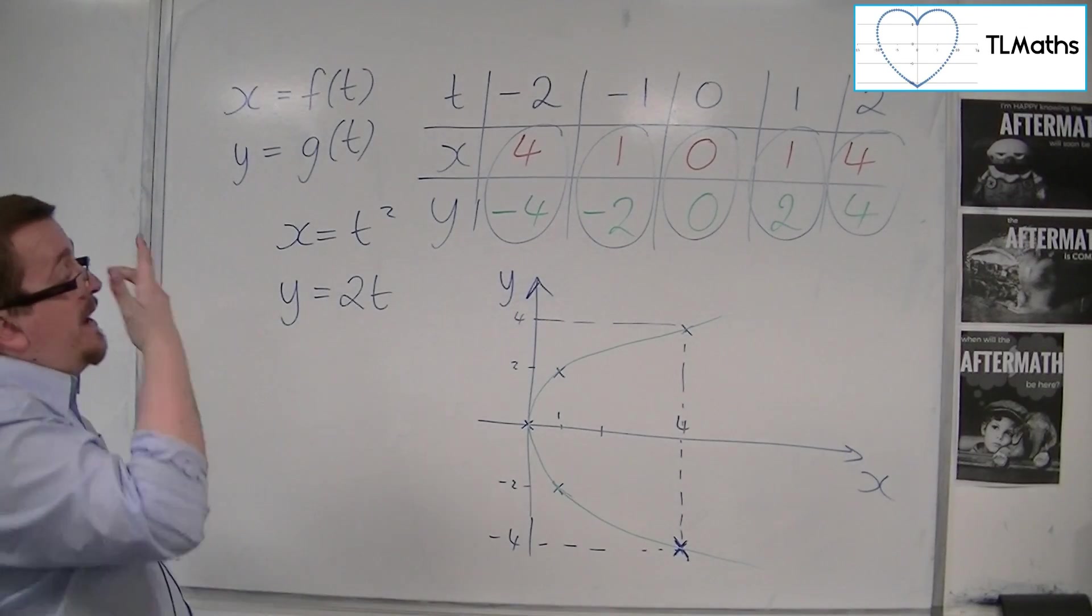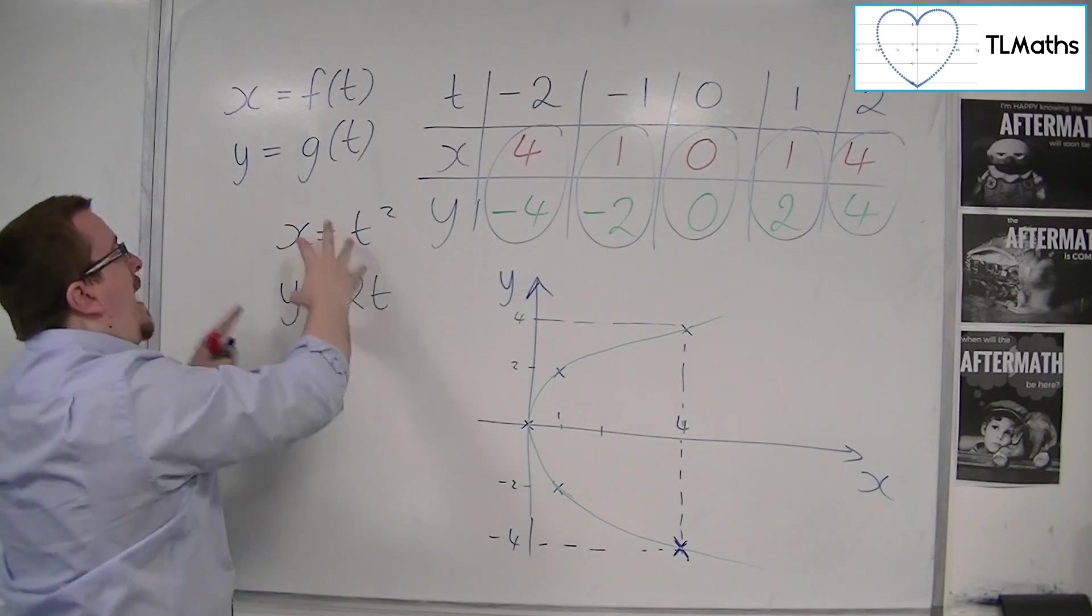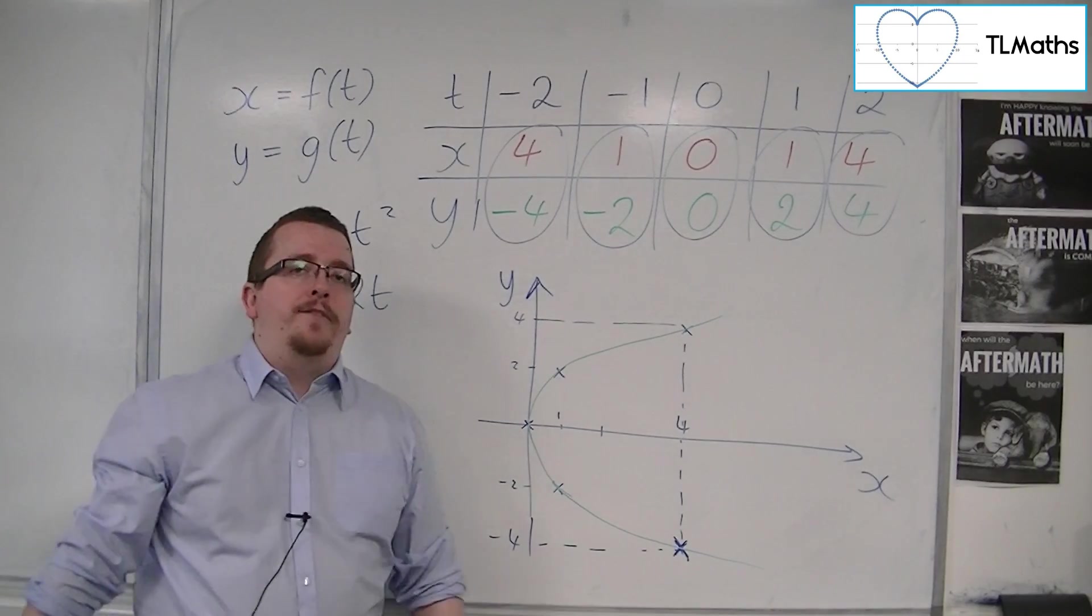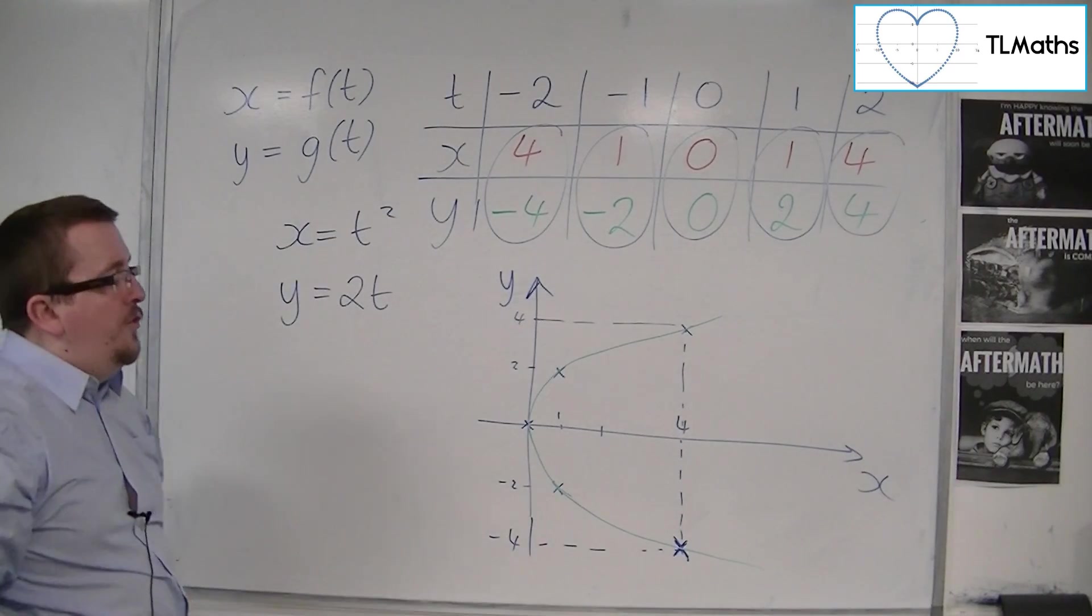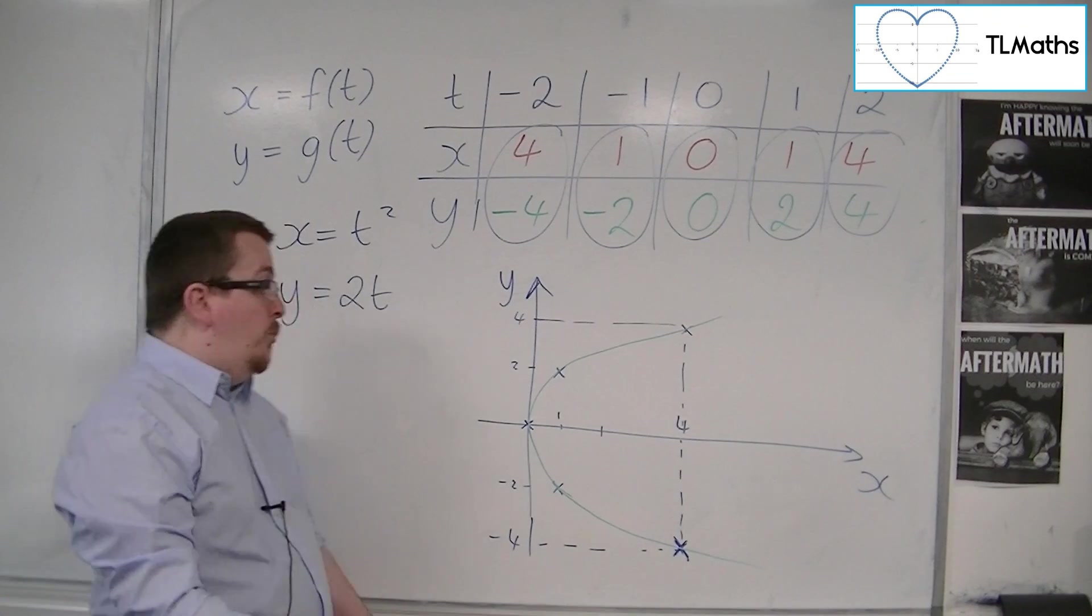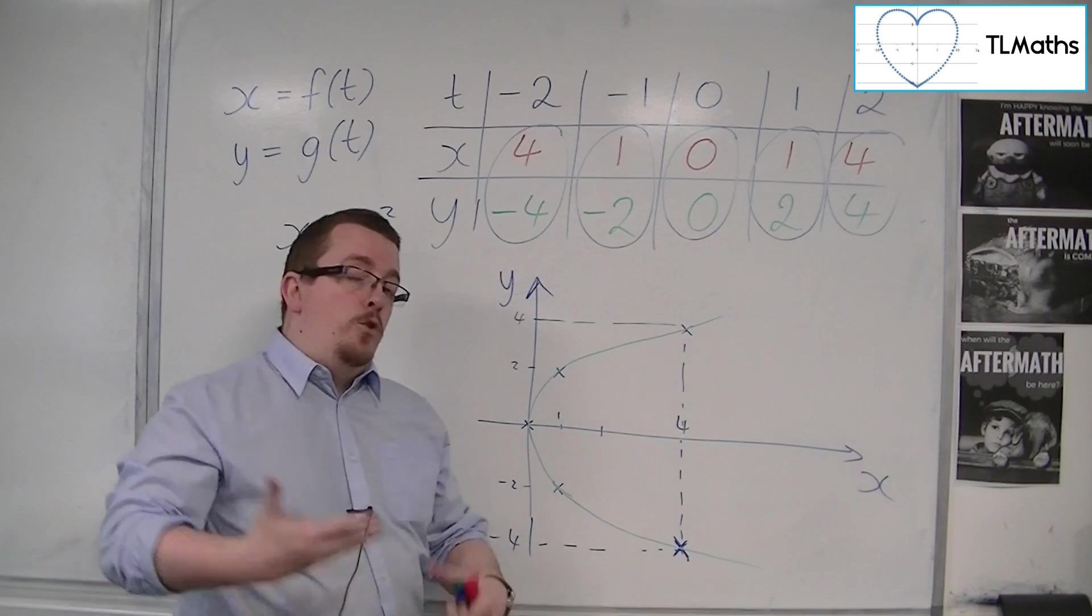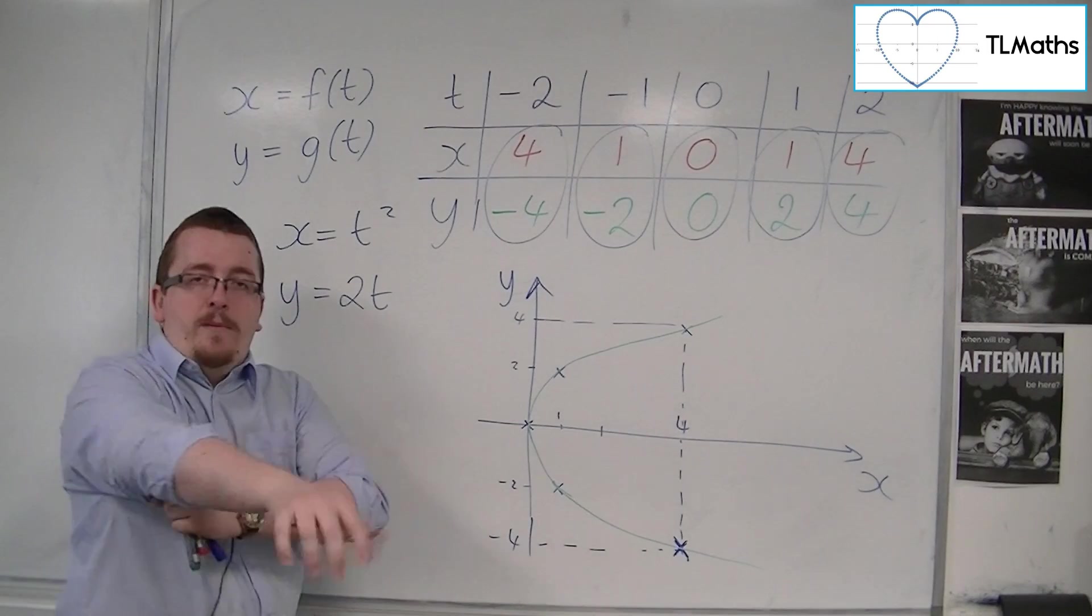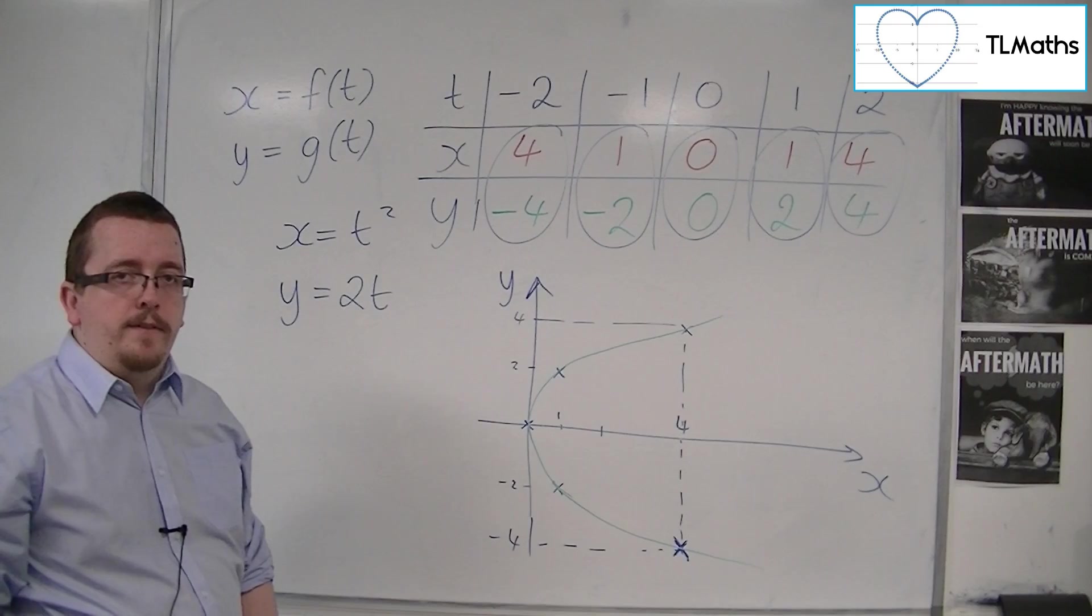But what I want to get at is that we can relate the parametric equations back to Cartesian points, x, y points, and draw a curve of it. And how you modify those two functions will change up that curve considerably. And it's well worth a little bit of time playing around on software like Autograph or Desmos and trying these out and seeing what crazy shapes you can come up with just choosing different functions for x and y.